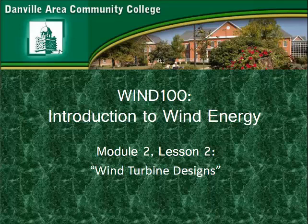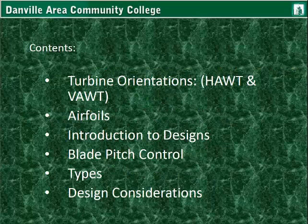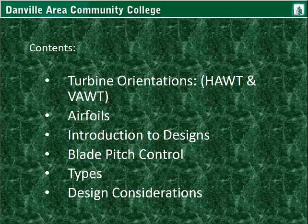This is Lesson 2 for Module 2, Wind Turbine Designs. In this presentation we're going to talk about the turbine orientations — the horizontal axis wind turbine and the vertical axis wind turbine — and also talk about airfoils, which are basically the blades and how they're contoured and shaped. An introduction to designs, the concept of blade pitch control, different subtypes, and design considerations as well.